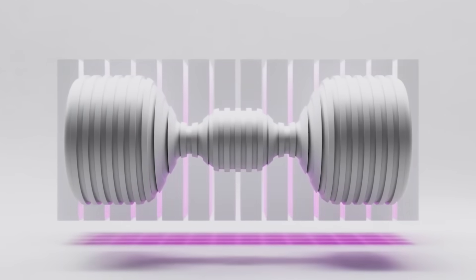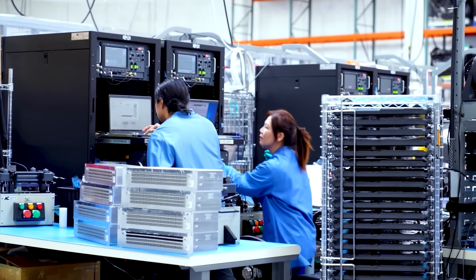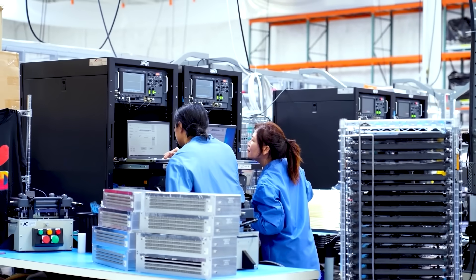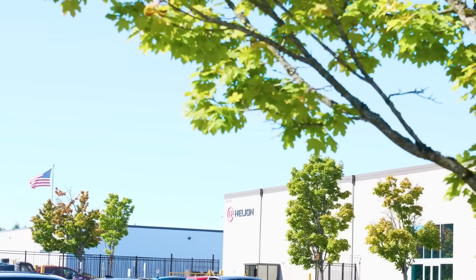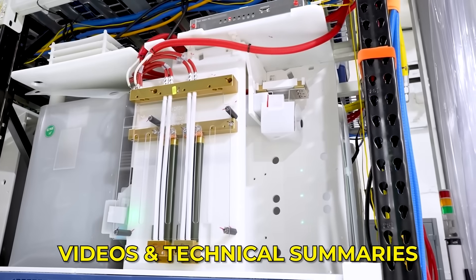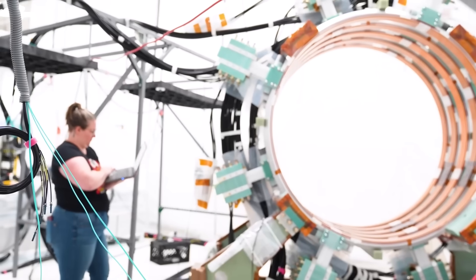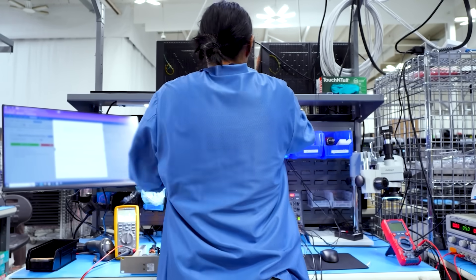Helion Energy's main device is called the Trenta machine. It has often been described as secretive, though the company has publicly released data, videos, and technical summaries about its results. The concept behind it is not entirely new.